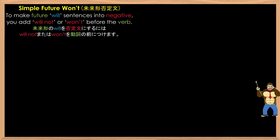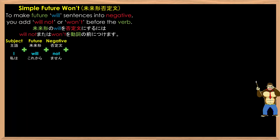To make future will sentences into negative, you add will not or won't before the verb. As in: I will not eat a banana. So as you can see here, between the subject I and the verb eat, we have will not.